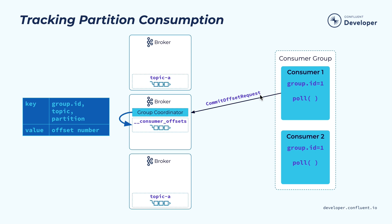In Kafka, we also provide a way for the consumer to keep track of where they have consumed. Keeping track of the consumer position is relatively easy because for a given partition, it's always given to a single consumer, and all the records within the partition are always given to the consumer in offset order. So the consumer really needs to track the last offset it has consumed for each of the partitions.